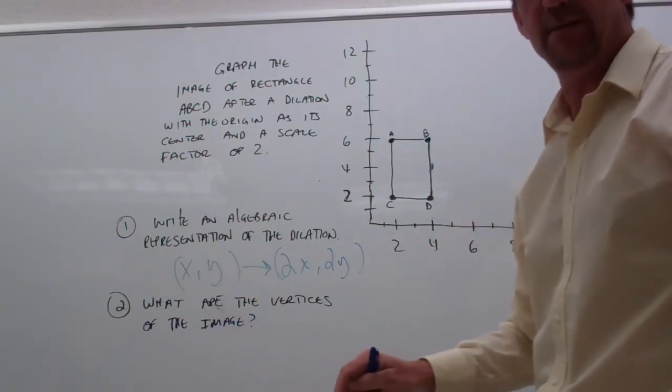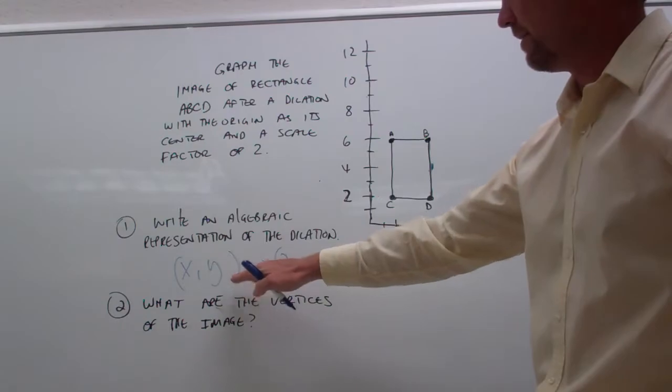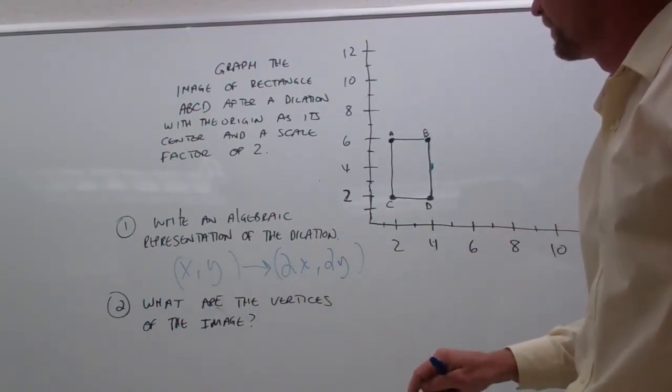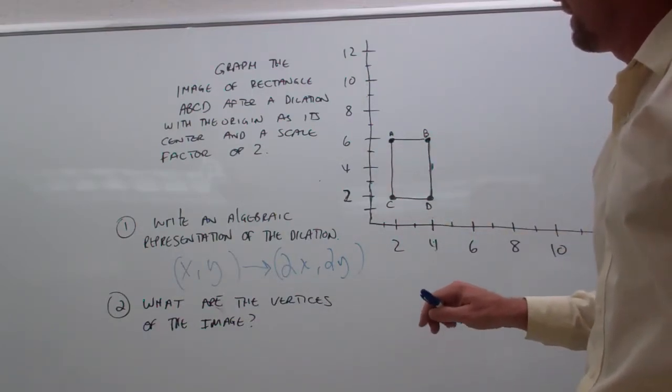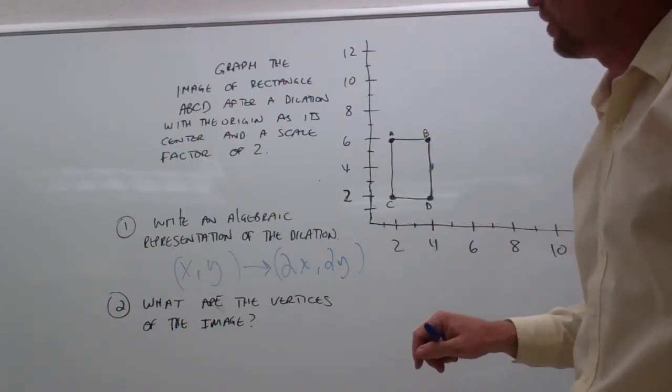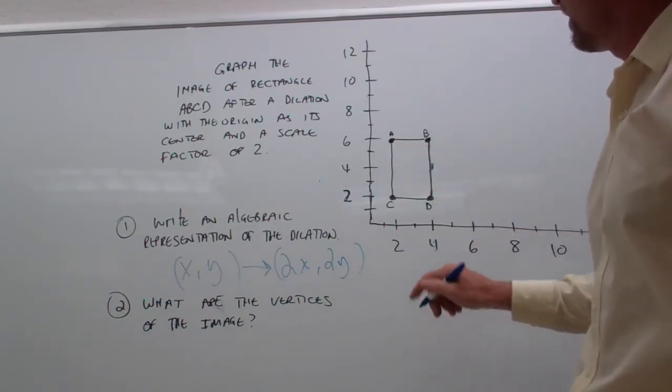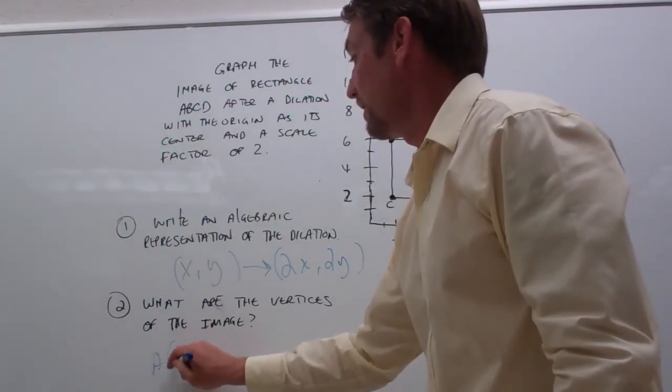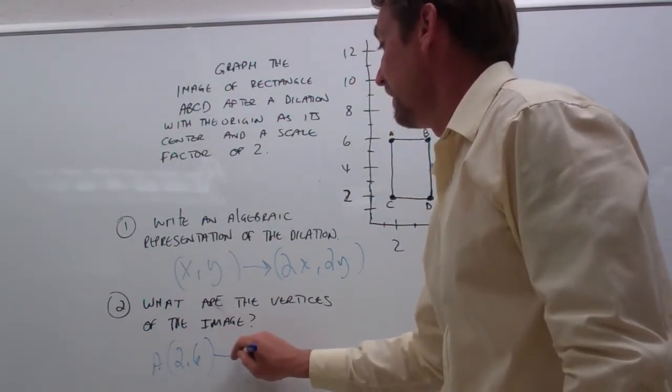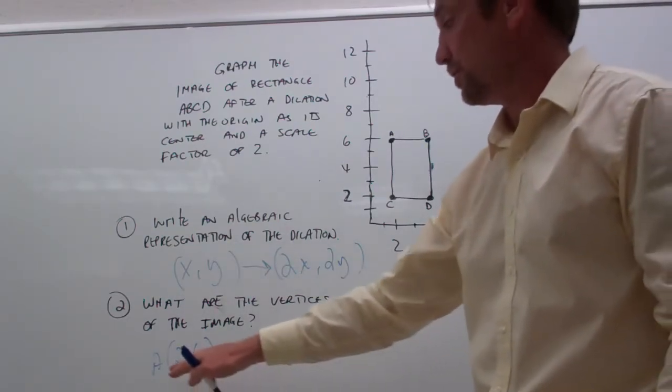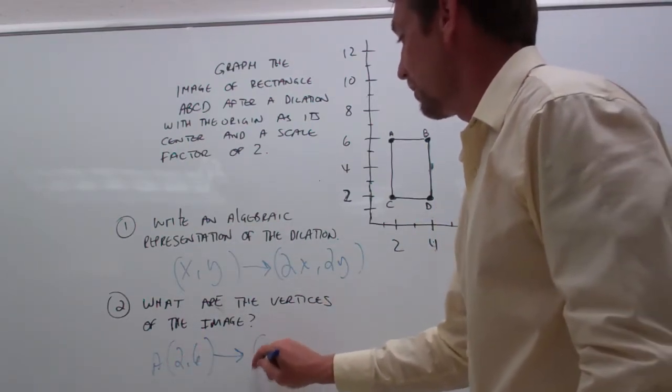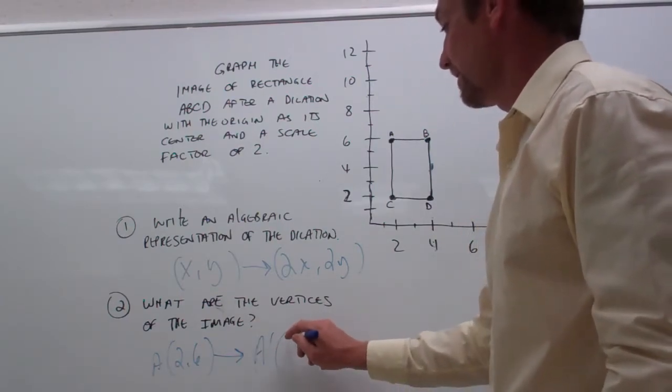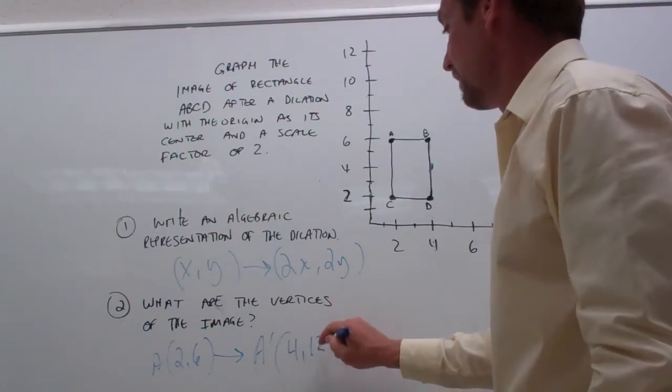And then the way we'll find the vertices of the image is by applying our rule. We're going to multiply our x and y coordinates by 2. So, if you notice, vertex A on our pre-image or our original, A has coordinates of 2, 6. And when we apply our rule, well, 2 times 2 is 4, so A prime will have coordinates of 4, 12.